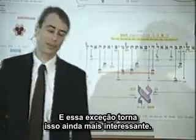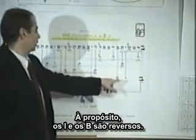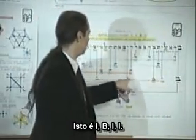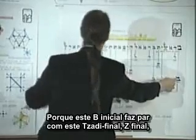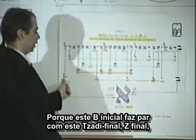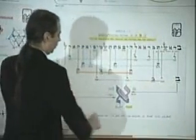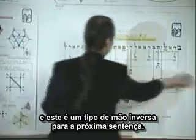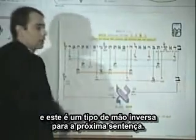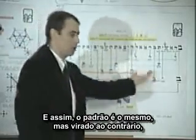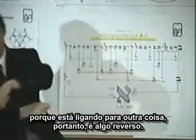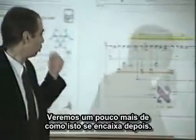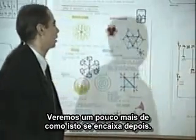The Y's or I's and B's are reversed — it's I B I I — because this initial B pairs with the final tzadi to make a spin axis, which I'll show later. This is a reverse handoff to the next sentence. The pattern is the same but turned upside down because it hooks to the other element — a reverse thing that keeps flipping on itself. We'll see more about how that fits together later.